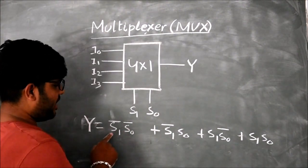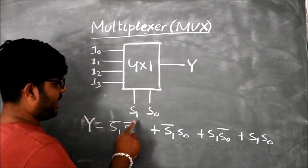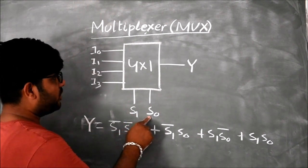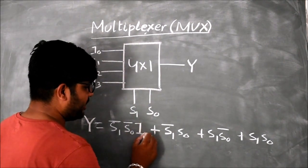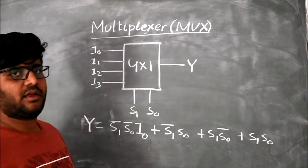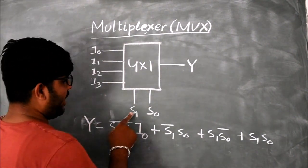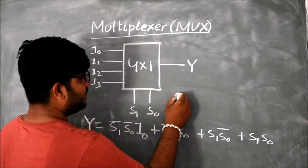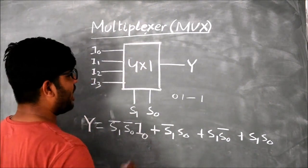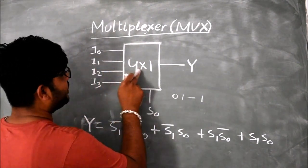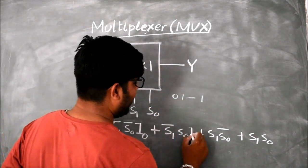If I make S1 and S0 as 0, 0, then I0 is routed to Y, so I have to place I0 here. When I make 0, 1, which is the binary representation of 1, I1 is routed to Y, so here I can write I1.